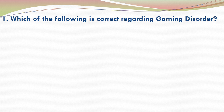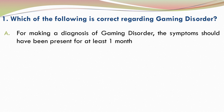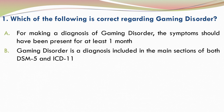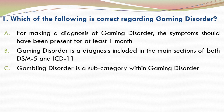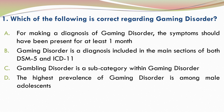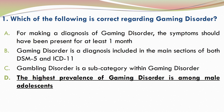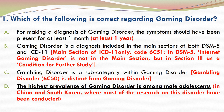Question 1: Which of the following is correct regarding gaming disorder? There are four options — please go through the options and make your selection. You can pause while you decide your answer. The correct answer is D. The highest prevalence of gaming disorder is among male adolescents, especially in China and South Korea, where most of the research on this disorder has been conducted.